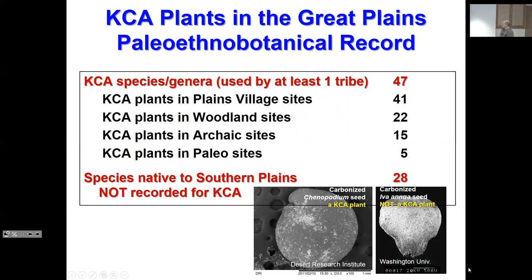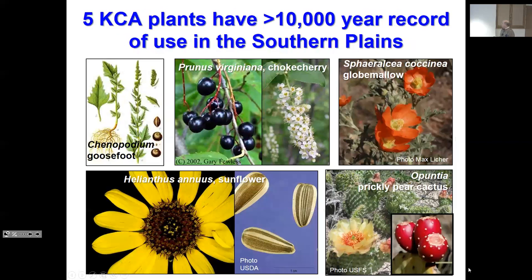There are five plants still used that have been in use for much greater than 10,000 years — and that's pretty impressive. There are also several species in the record that don't show up in the KCA record. Goosefoot, Chenopodium, is a KCA plant, carbonized, and sumpweed in the sunflower family, Iva annua, is very widespread historically in the paleoethnobotanical record but has no record for the KCA. That's true for many cultures — it seems that once corn came in, they dropped a lot of these grains that were more like famine foods. The five plants with a greater than 10,000-year record are: Goosefoot, Chokecherry, Psoralea, Sunflower, and Opuntia.